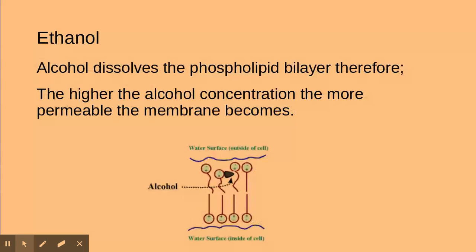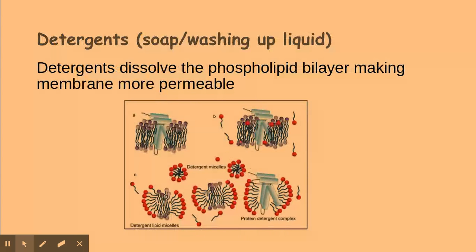Ethanol, or alcohol — ethanol is an example of an alcohol — dissolves the phospholipid bilayer. Therefore, at higher alcohol or ethanol concentrations, the membrane will become more permeable, allowing more water-based substances to move out of the cell.